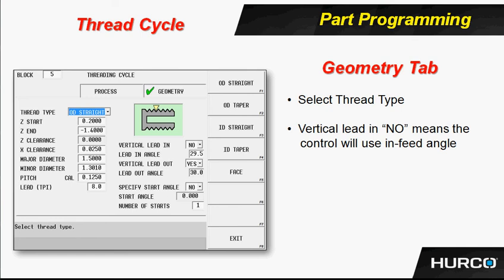Give it a Z start and a Z end. We want to make sure we start far enough in front of the part so that by the time it gets into the cut, we have accelerated to the speed that we're going to need. Give it the final Z depth. The X clearance is how far it's going to pull off of the major diameter — for an OD thread, for example — between passes. So it's going to lift up past that one-and-a-half-inch major diameter by 25 thousandths, retract back to 200 thousandths in front of the part at our Z start, plunge down to the next step and continue on, until it reaches the minor diameter programmed here of 1.301 inches.